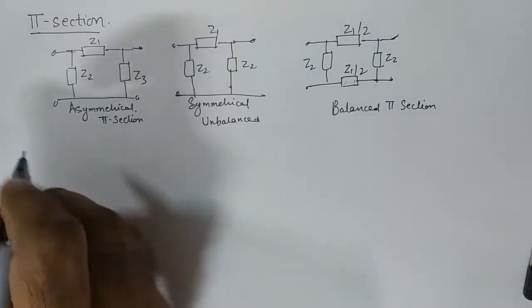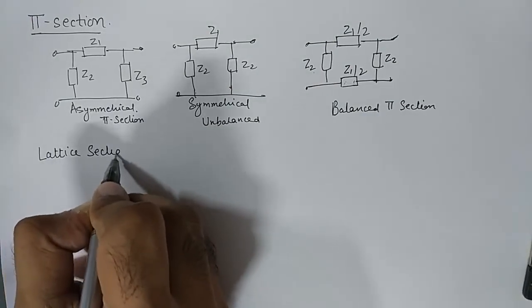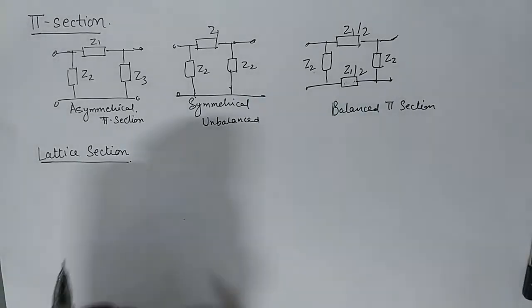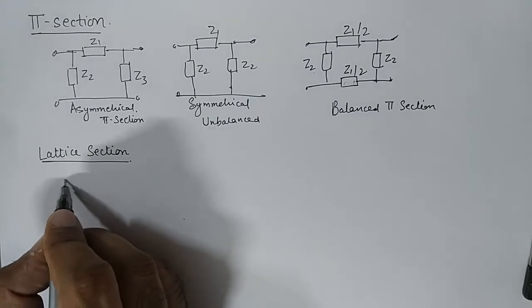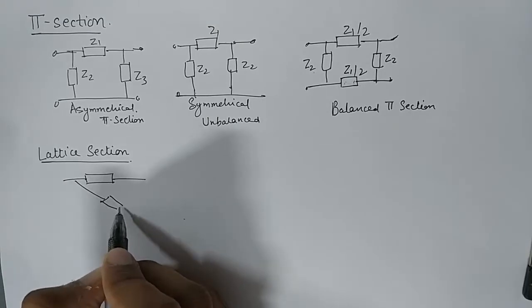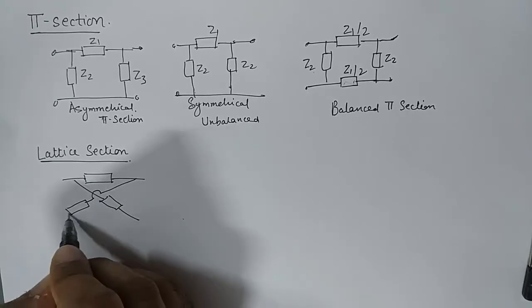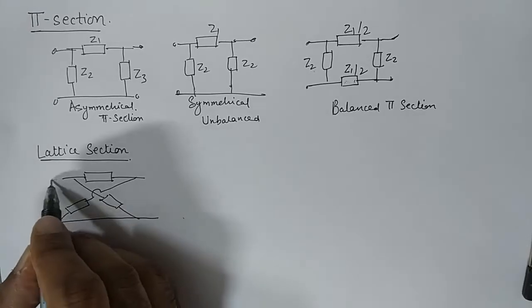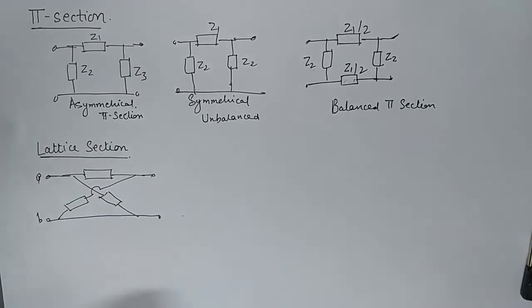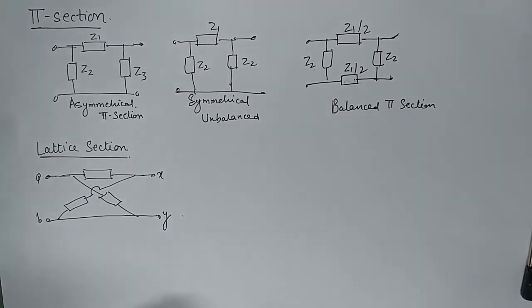Then we have another configuration known as lattice section. A lattice section would look something like this. Again we have got two ports, KV could be used as input and XY could be used as output.